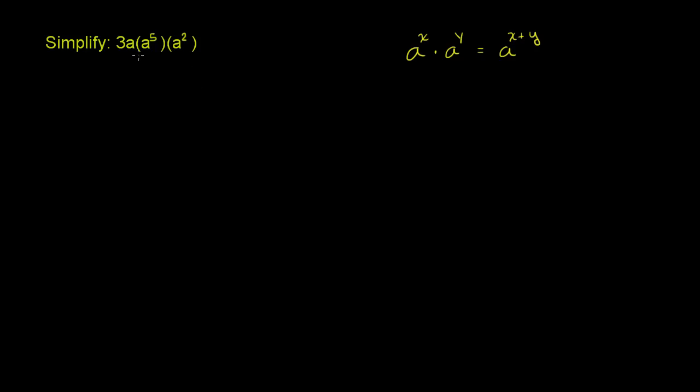So let's just apply it here. Let's start with a to the fifth times a squared. If we just apply this property, this will result in a to the 5 plus 2 power. That's what those simplify to, and we still have the 3a out front.